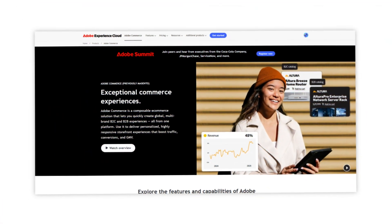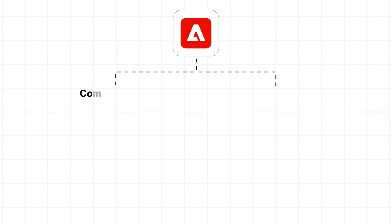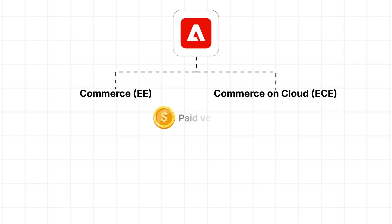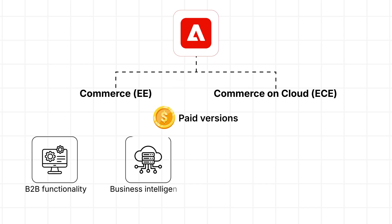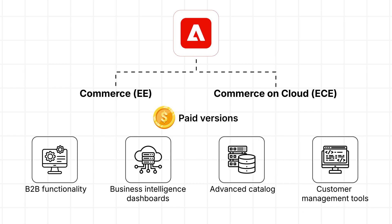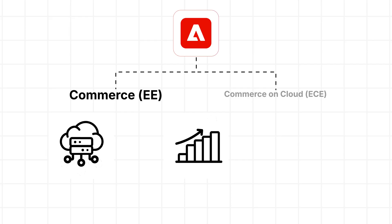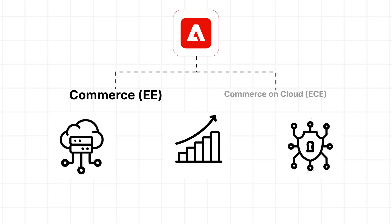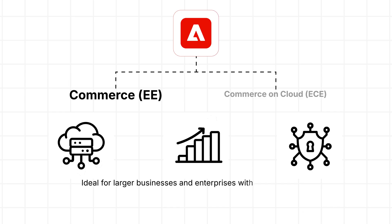Next, what is Adobe Commerce? Adobe Commerce is divided into two editions: Commerce EE and Commerce on Cloud (ECE). Both are paid versions that provide essential additional features such as B2B functionality, business intelligence dashboards, and advanced catalog and customer management tools. Notably, Commerce on Cloud includes cloud hosting, ensuring scalability and enhanced security. These editions are ideal for larger businesses and enterprises with complex needs.